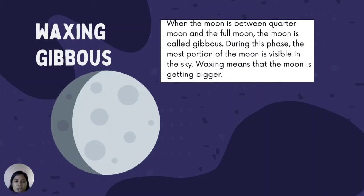Waxing Gibbous: When the moon is between quarter moon and the full moon, the moon is called Gibbous. During this phase, most of the moon is visible in the sky. Waxing means that the moon is getting bigger.